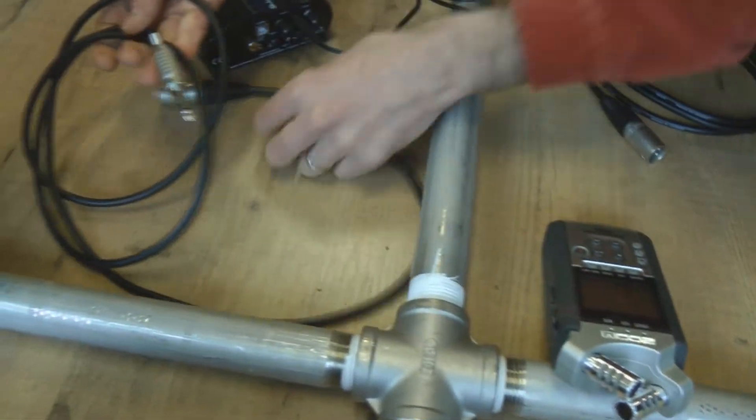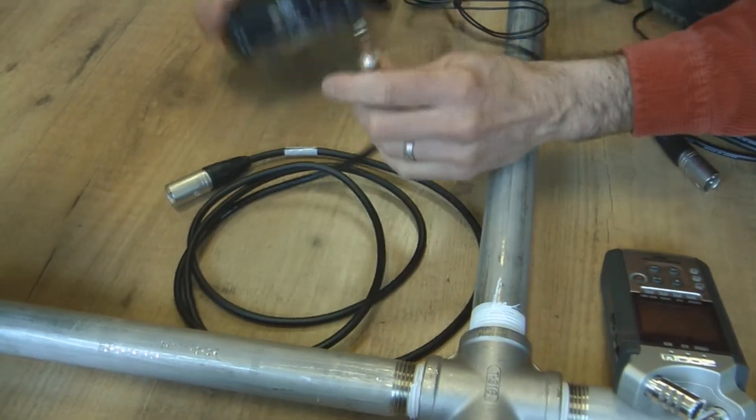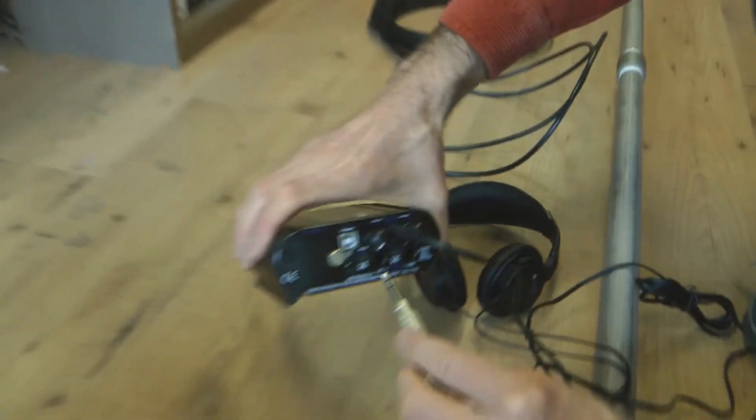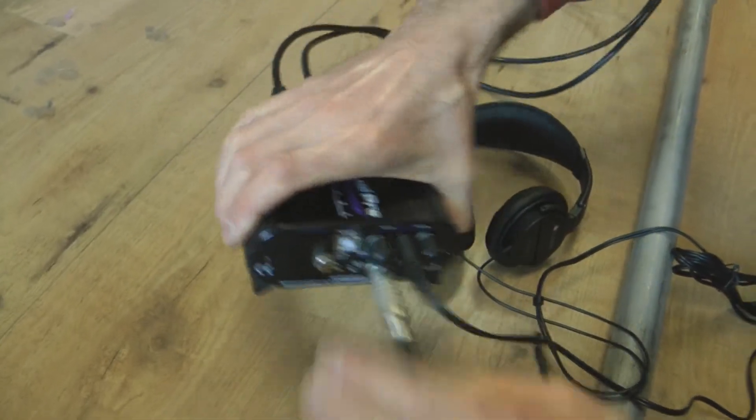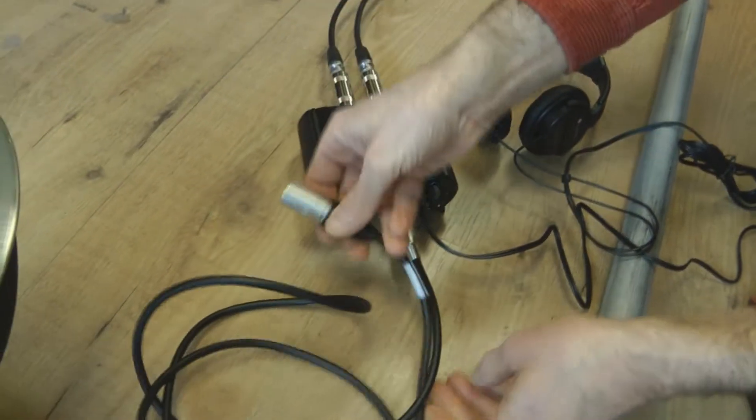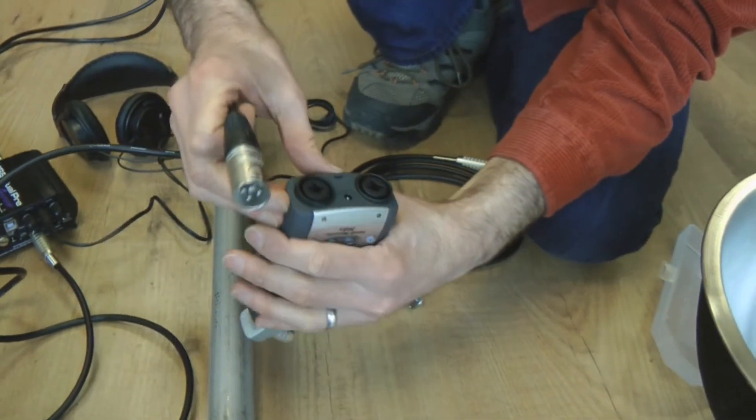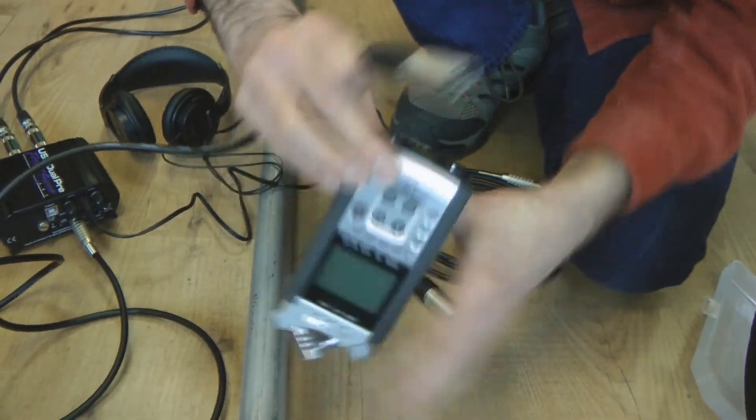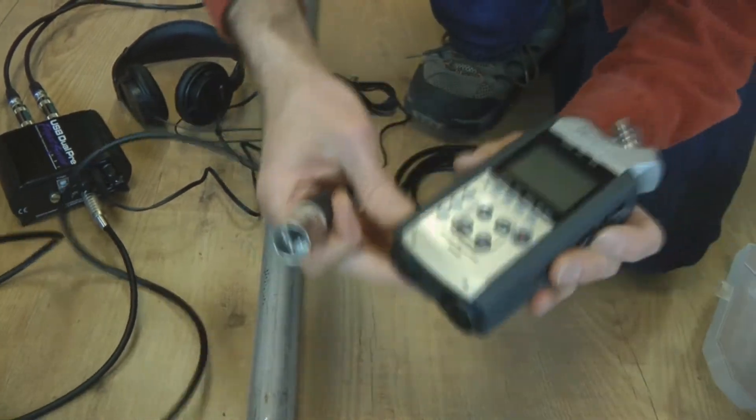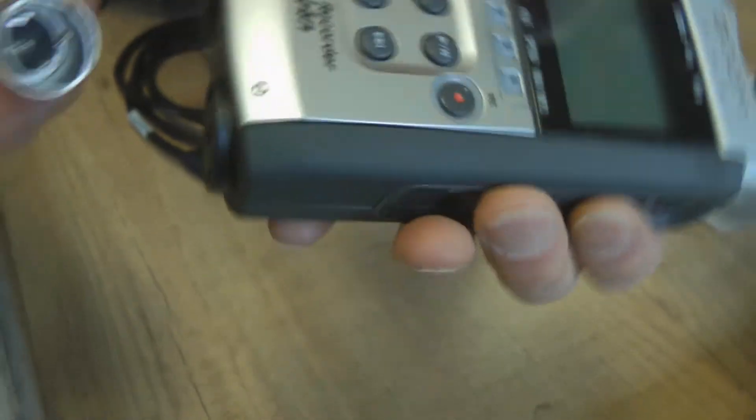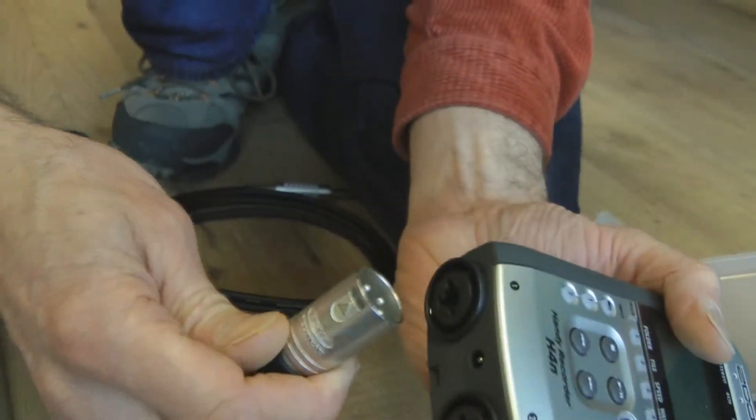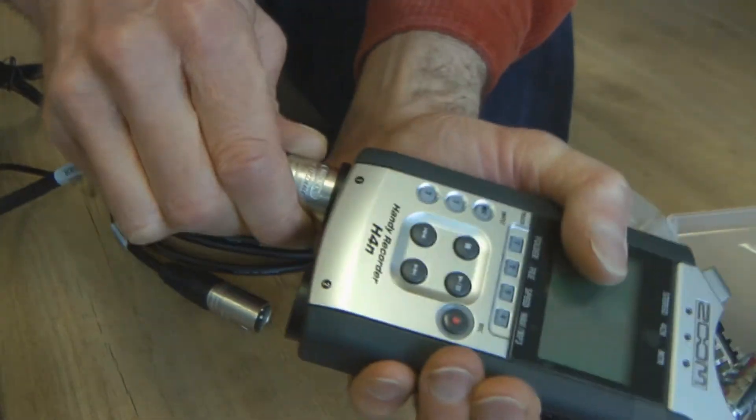So one cable plugs into the left output, and it goes into the left input of the Zoom. And you can see we have them labeled here 1 and 2 instead of left and right, so 1 is traditionally left. Okay, so that goes in just like that.